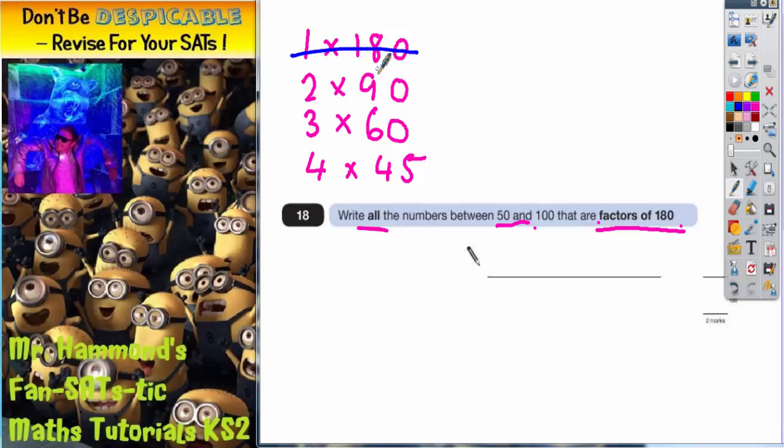90 is between 50 and 100, so that's going to work. 60 is between 50 and 100, so that's going to work.